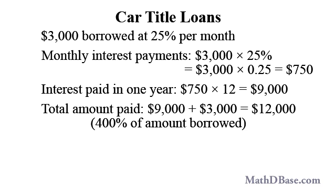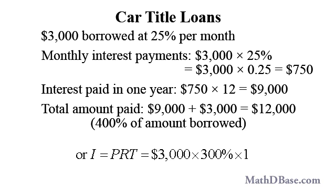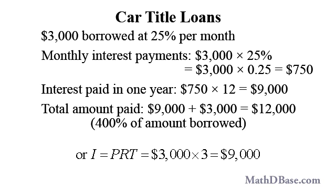25% interest per month translates to 300% — 12 times 25% — interest per year. Using the interest formula I equals PRT, we would have $3,000 times 300% times 1, or $3,000 times 3, which equals $9,000. The principal plus interest is $3,000 plus $9,000, or $12,000.